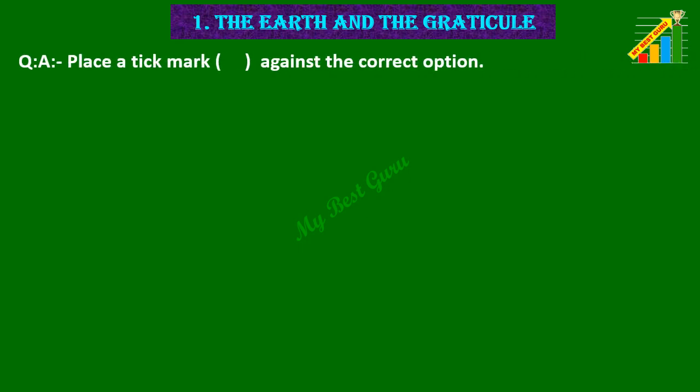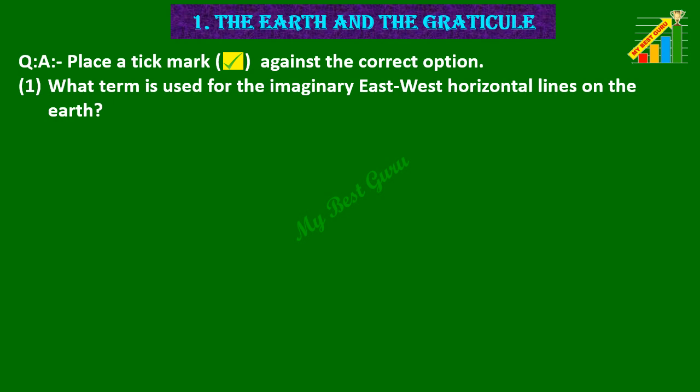Question A. Place a tick mark correct against the correct option. 1. What term is used for the imaginary east-west horizontal lines on the earth?